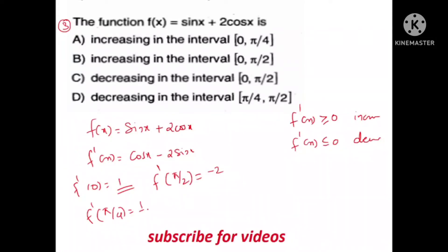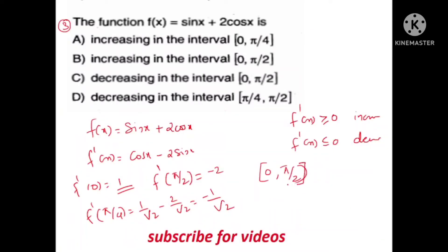f'(π/4) equals 1/√2 minus 2/√2, that is equal to minus 1/√2. So f'(π/4) is negative, meaning the main side becomes negative. From 0 to π/2, this function will increase or decrease.